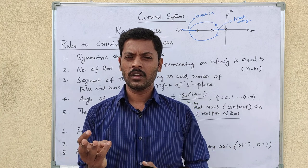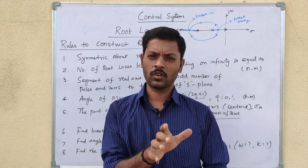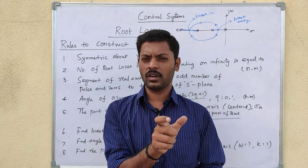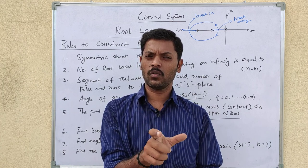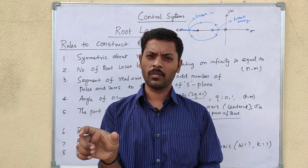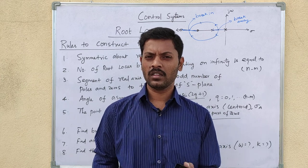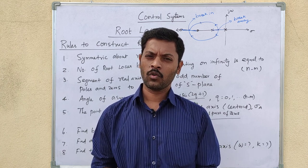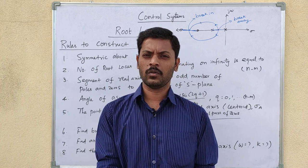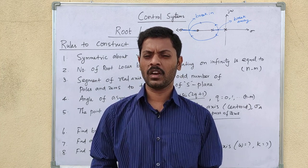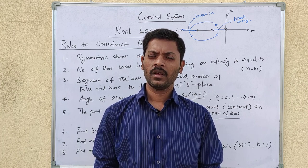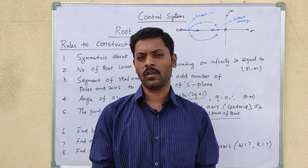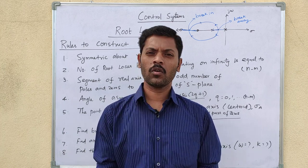To summarize the steps to construct the root locus: first, for the given transfer function, find poles and zeros and plot them on the S-plane. Then identify which segments of the real axis are on the root locus. Then find the asymptotes, number of asymptotes, angle of departure, angle of arrival, and the intersection with the imaginary axis.